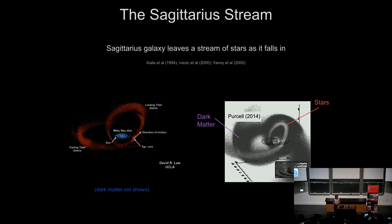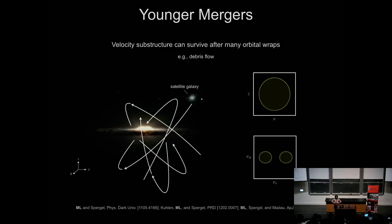However, there's another class of structure that can get left behind that visually is not quite as stunning but is quite important. This is the kind of structure left behind when a satellite galaxy has made many more orbits — these tend to be older mergers. The satellite galaxy has fallen in, gotten disrupted, and a lot more material has come out. Because it's completed many more orbits, all its material gets spread out spatially, so we can no longer make out the beautiful paths we could for the streams.